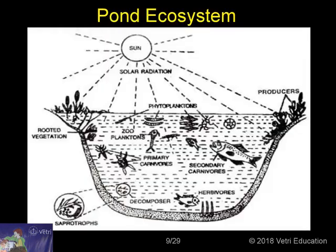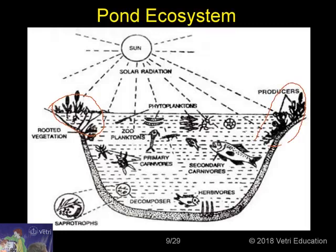This slide shows how a pond ecosystem is constructed. The primary producers are at the bank and in the water — including algae, biflagellates, and Spirogyra. All the animals depending on the producers are divided into consumers: zooplankton, primary carnivores, secondary carnivores, and herbivores.